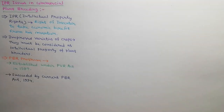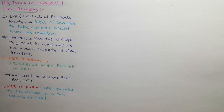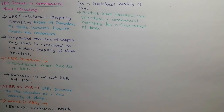The Plant Breeder Right program was first established in 1987 under the Plant Variety Right Act, which was succeeded by the current Plant Breeder Right Act 1994. Plant Breeder rights are also known as plant variety rights, which are intellectual property rights granted to the breeder of a new variety of plant. They are exclusive commercial rights for a registered variety of plant, protecting plant breeders and giving them a commercial monopoly for a fixed period of time.